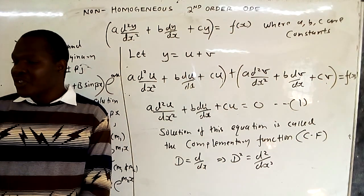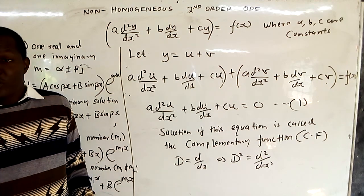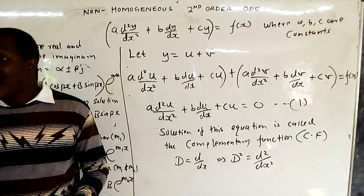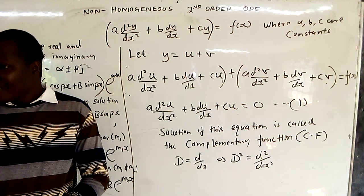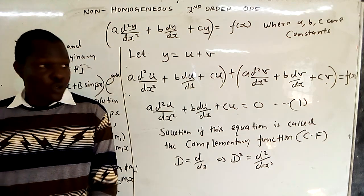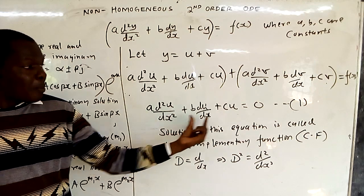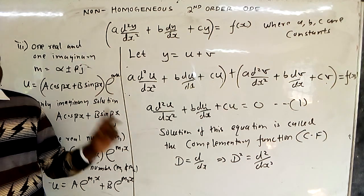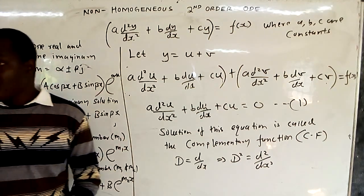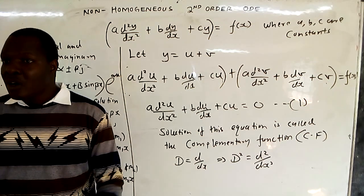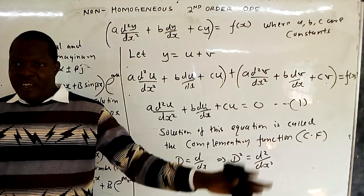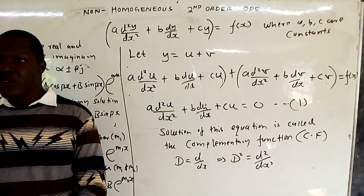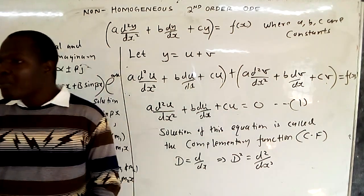All those homogeneous equations we were solving before are giving us only the complementary function. The general solution of the homogeneous second-order ODE — the part in terms of u — gives the complementary function, depending on whether the roots M are two real, one real, one real and one imaginary, or only imaginary.